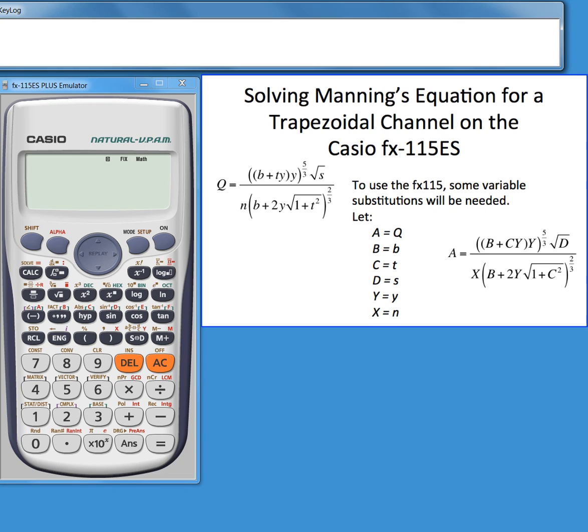In order to use the Casio we have to do some translations of the variables. We don't have a q variable for example, nor do we have a t. We do have a, b, c, d, x and y, so we'll do some translations here.